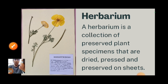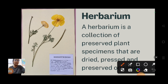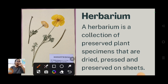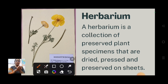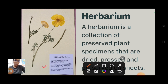Now, herbarium. You have done this activity many times - you can see this diagram. You may have done it in class 6 or 7. Herbarium is when you take a flower or a leaf and press it in a book. If done systematically, you paste the specimen on a sheet of paper and write the name properly, when it was collected, and all that.